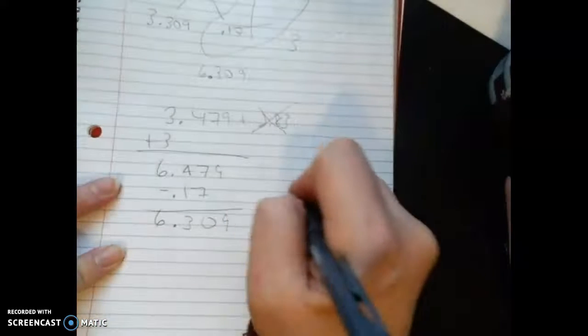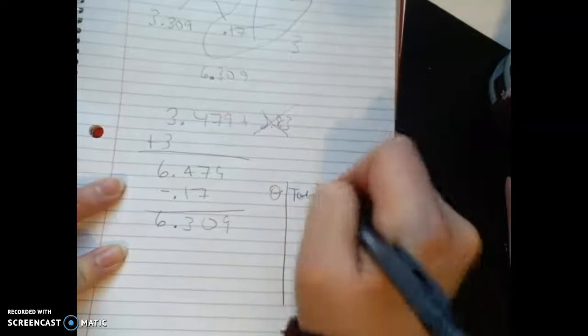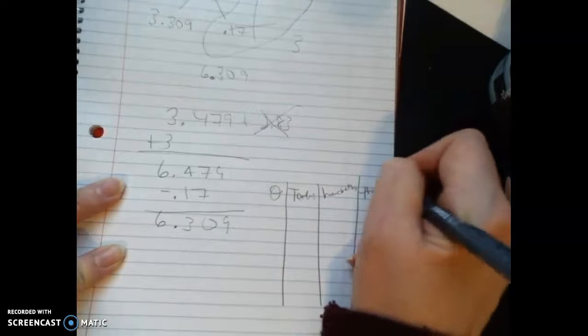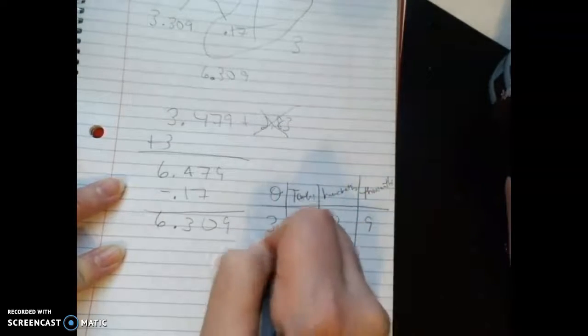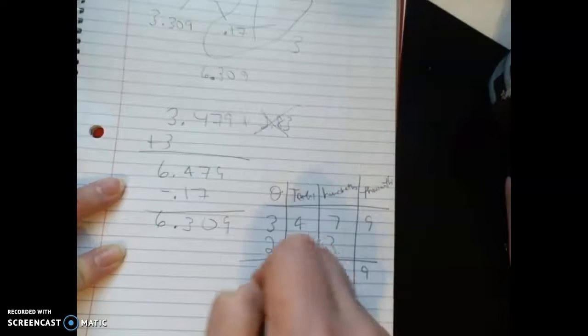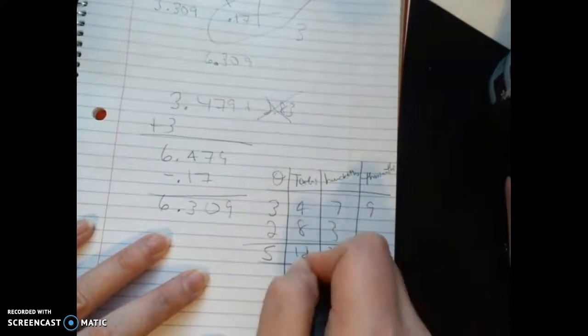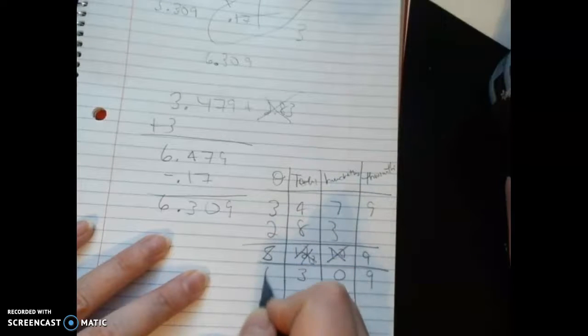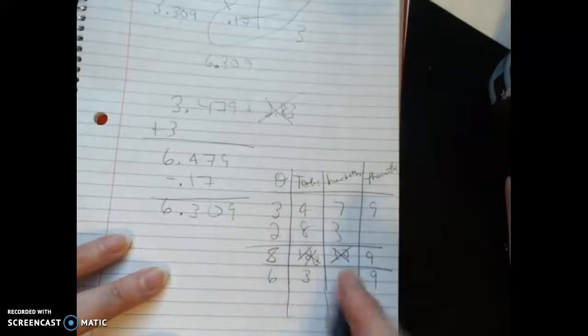Kids could do a place value chart. We would have ones, tenths, hundredths, and then thousandths. We'd have 3, 4, 7, 9 and then 2, 8, 3. They could add down every column. The 9 is fine, the 10 needs to be a zero with regrouping—we'll make that 13. That 13 needs to be a 3 with regrouping, so that becomes 6. They can look at their place value table and say, 'These are my ones and these are my tenths,' so the decimal has to go right about there.